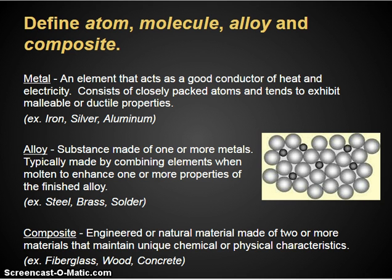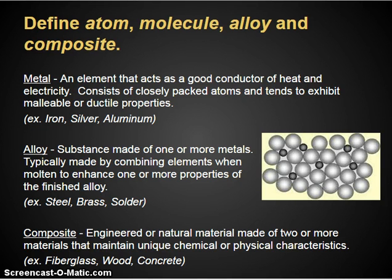Metals are particular elements and alloys that act as good conductors of heat and electricity. They consist of closely packed atoms and tend to exhibit malleable or ductile properties. Atomically, the nucleus is in a sea of electrons, meaning the electrons from metals flow very freely, which is why they're so highly conductive. Examples of metals would be iron, silver, and aluminum.